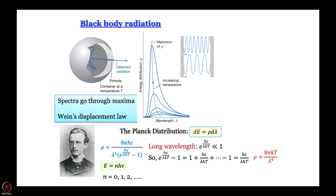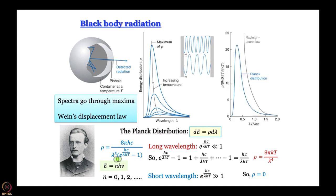At short wavelengths, e to the power hc/λkT becomes much much larger than 1 — it is a huge number. So the denominator becomes enormous and rho approaches zero. This means Planck's distribution goes through a maximum and approaches zero at very high frequency. When you compare this distribution with the experimental spectrum at a given temperature, they match perfectly. That is why Planck's distribution is widely accepted.